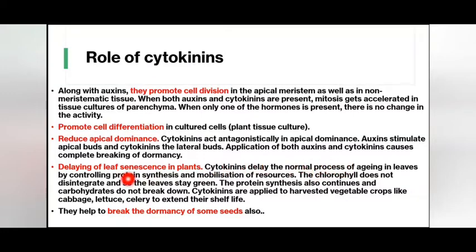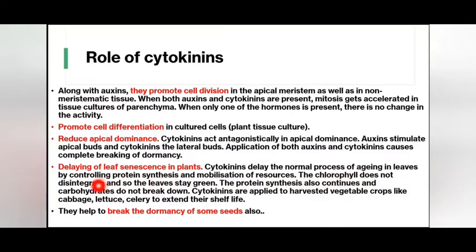Cytokinin delays the normal process of aging in leaves by controlling protein synthesis and mobilization of resources. The chlorophyll does not disintegrate and so the leaves stay green, protein synthesis continues, and carbohydrates do not break down. Cytokinin are applied to harvested vegetable crops like cabbage, lettuce, and celery to extend their shelf life. They also help to break the dormancy of some seeds.